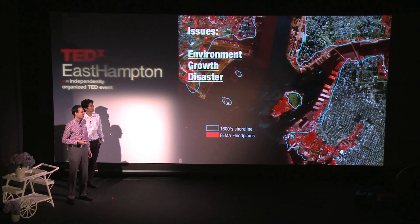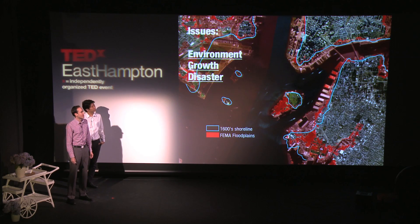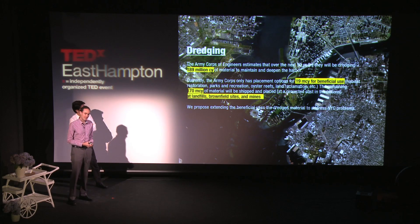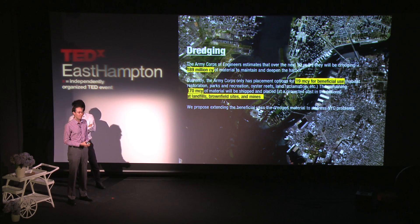This map illustrates some of the conflicts we see. You can see the original shoreline with the blue line for Manhattan, and it almost entirely matches up where we've grown the island with FEMA floodplains — so natural disasters come into conflict with the growth of the city. By looking at the future history of New York City we want to realign these traditionally conflicting objectives. Our opportunity lies in dredging: the Army Corps of Engineers estimates that over the next 50 years they're going to dredge 189 million cubic yards of material to maintain and deepen the harbor of New York City, and of that material they only have beneficial placement options for about 19 million cubic yards.